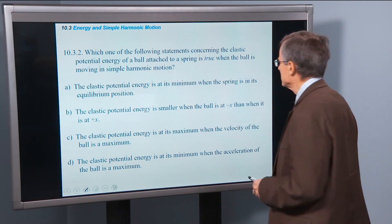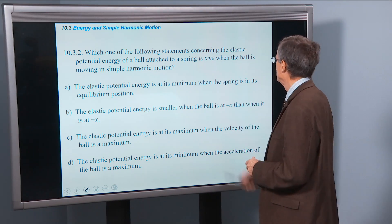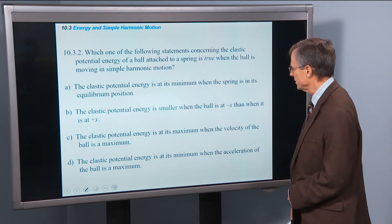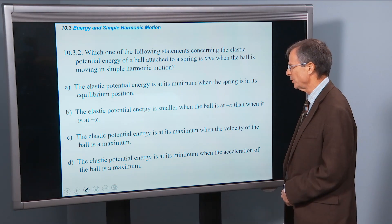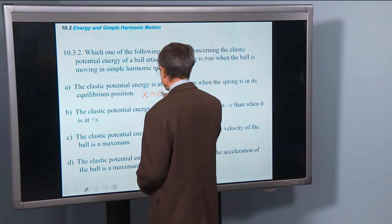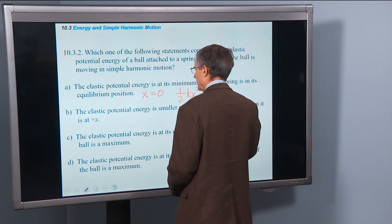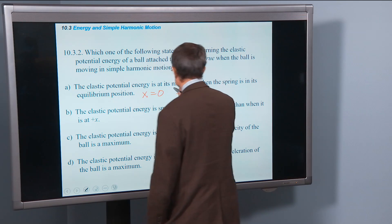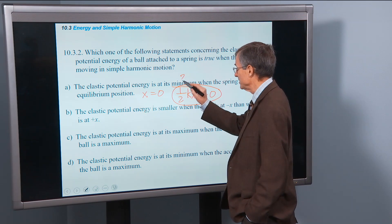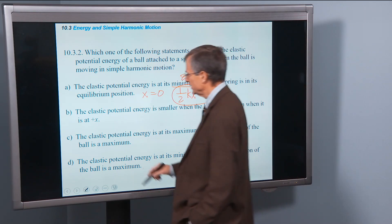Which one of the following statements concerning the elastic potential energy of a ball attached to a spring is true when the ball is moving in simple harmonic motion? The elastic potential energy is at its minimum when the spring is in its equilibrium position. Well that's not true because in its equilibrium position, x equals zero, and one half k x squared is also zero. So actually that is true. It says minimum. So we're going to get the minimum possible which turns out to be zero when the spring is in its equilibrium position. So that is true.